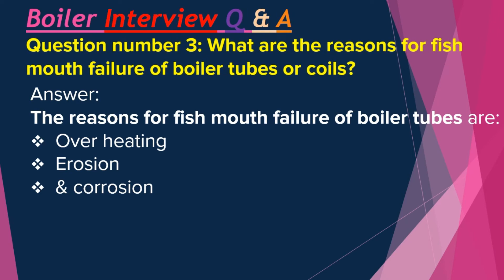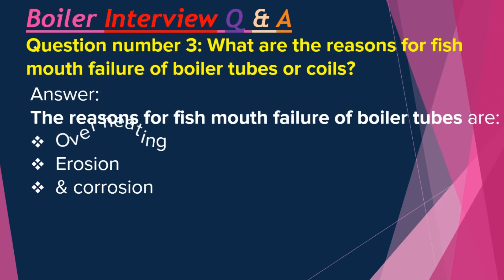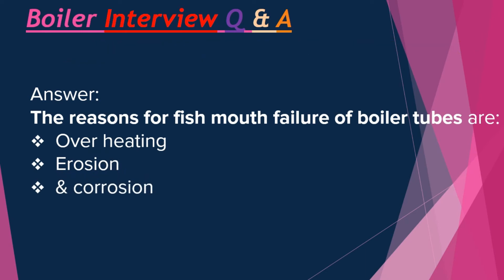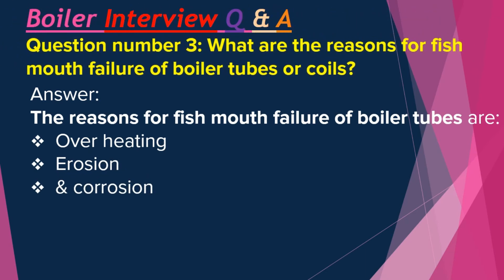Question number three: What are the reasons for fish mouth failure of boiler tubes or coils? Answer: The reasons for fish mouth failure of boiler tubes are overheating, erosion, and corrosion.